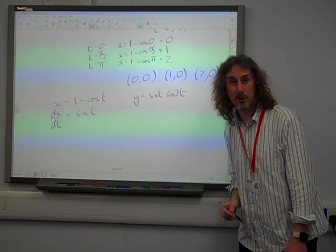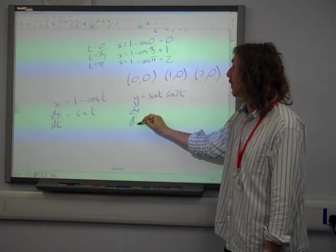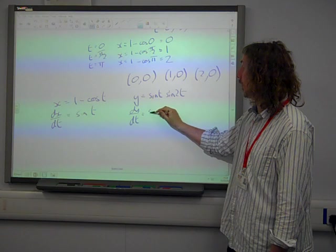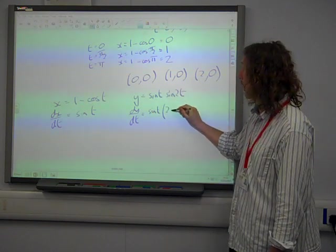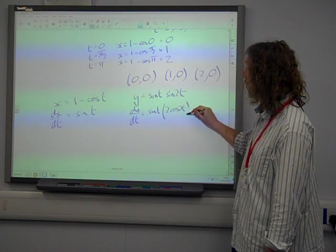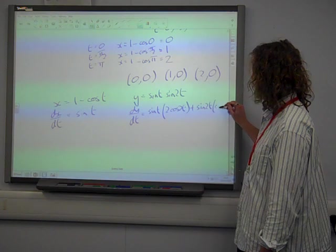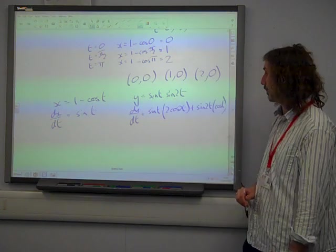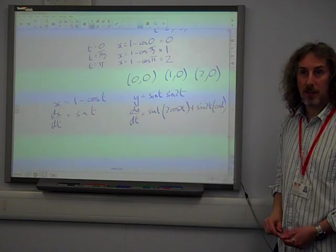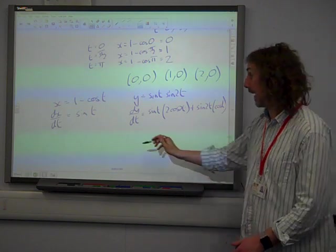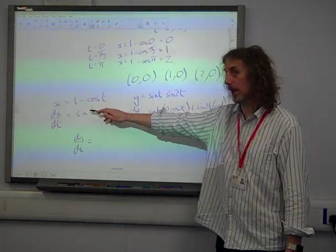That is a product rule. So dy by dt is the first, times the derivative of the second, which would be 2 cos 2t, plus the second, times the derivative of the first, which would be cos t. Which is as it is, we're not going to do anything with that just yet. So dy by dx is that one divided by that one. So dy over dx.